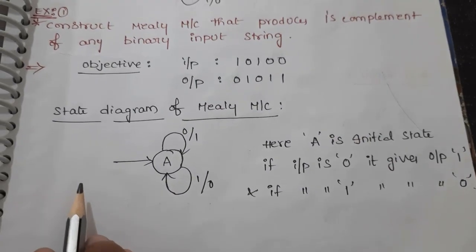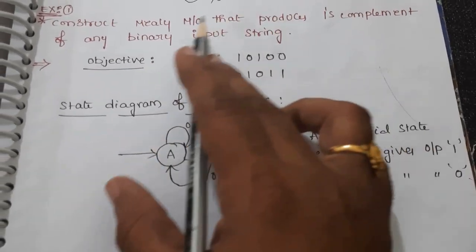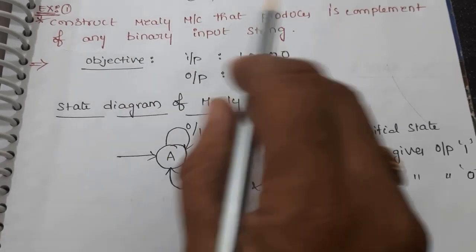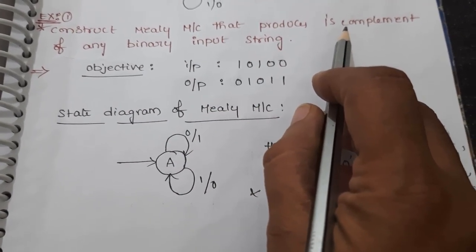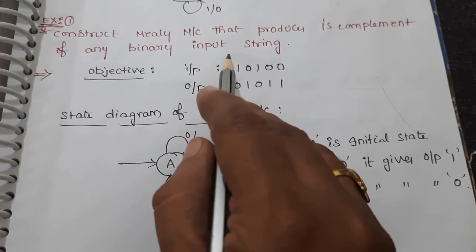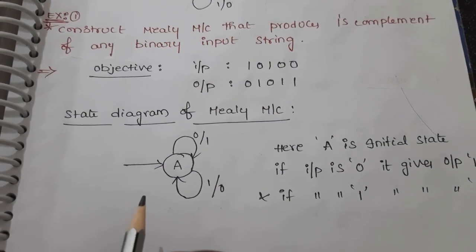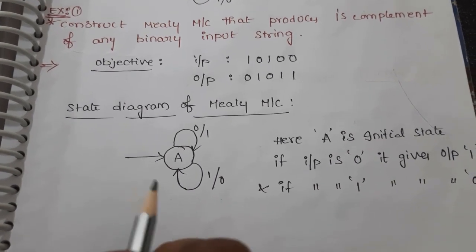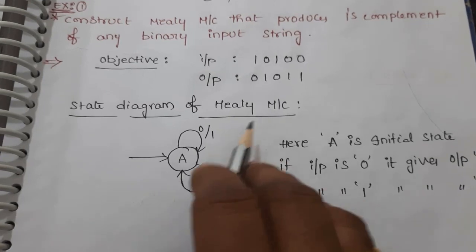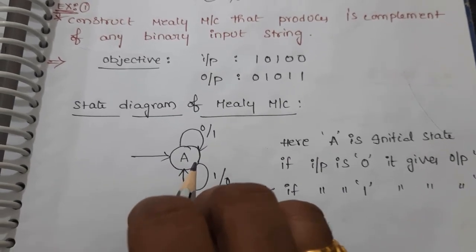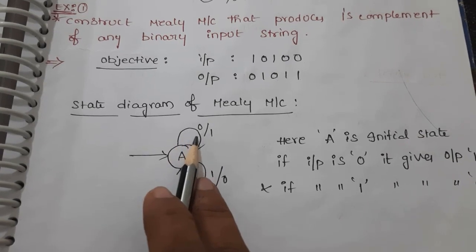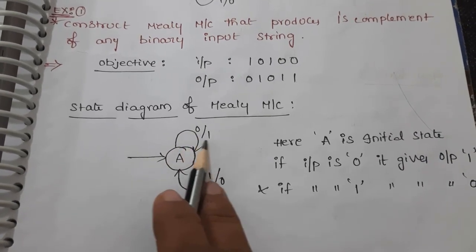Now let us see how to construct the state diagram for this objective. The type of state machine we need to construct is a Mealy machine, and the objective is for the Mealy machine to produce the one's complement of a binary input string. As we know, we have two kinds of state machines with output — Mealy machine and Moore machine — which we have already seen in the previous session. A Mealy machine is a finite state machine (FSM) that represents states, and where inputs as well as outputs are represented together.